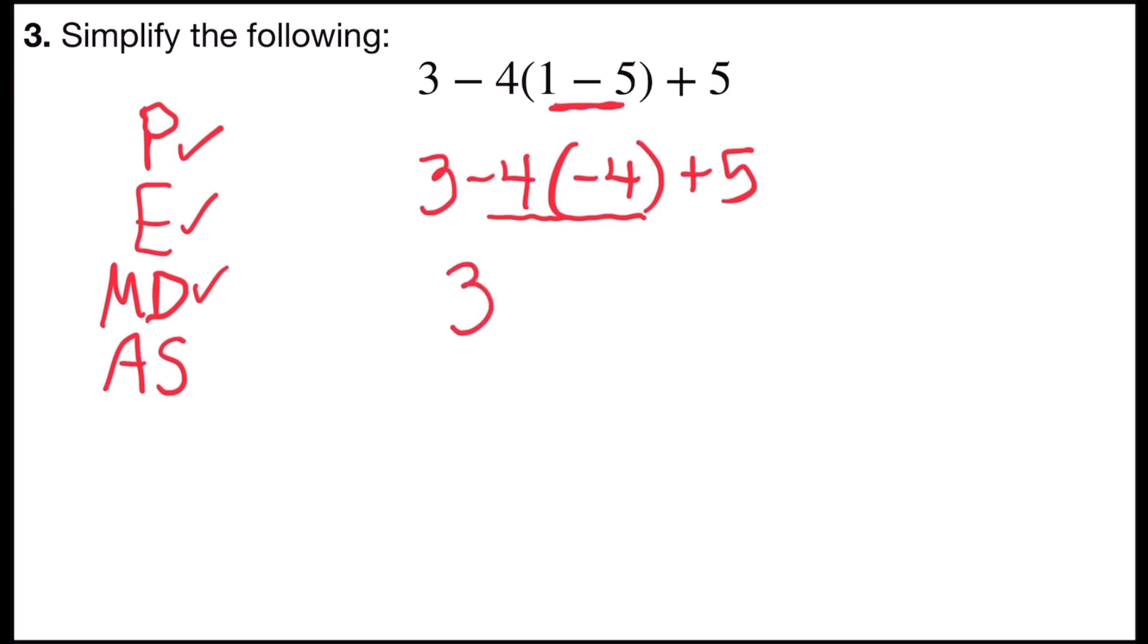So I have 3 plus 16 plus 5. All of the multiplication and division is done, so the last step is just adding and subtracting. I have 3 plus 16, which is 19. And the last step, 19 plus 5, gives me 24. So in simplified form, my answer would be 24.